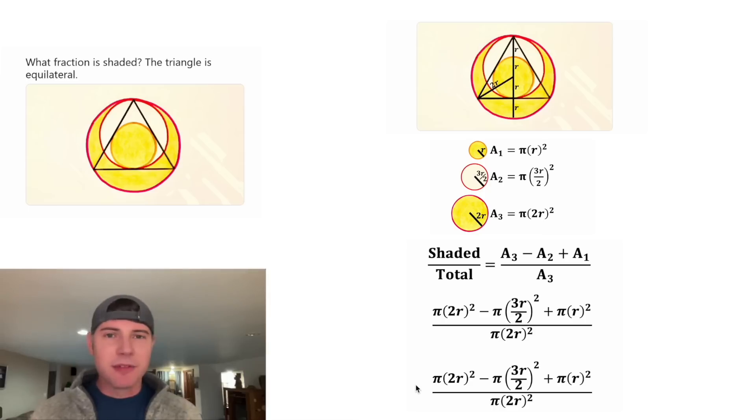And now let's copy this down and simplify it. For the first term, this exponent would distribute to both of these. So it'd be 2² r². And same thing for this one. The exponent would distribute to all three of these. So it'd be 3² r² over 2². And for this one, it would go to the r to be r². And then for this one, it would be 2² r².